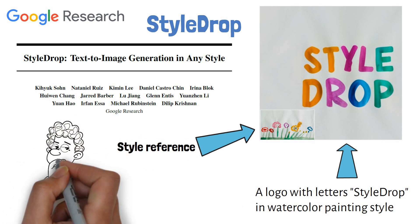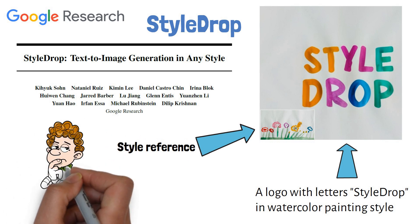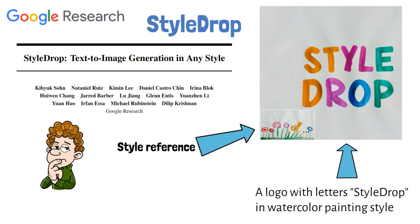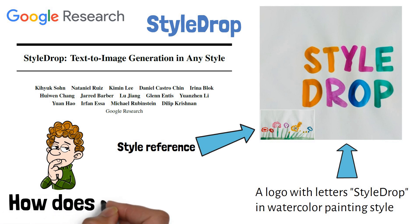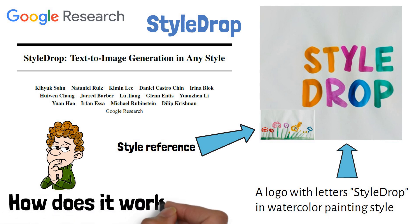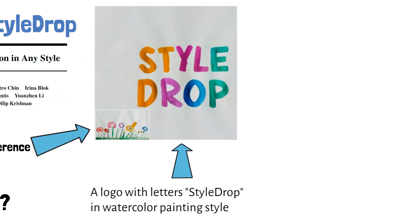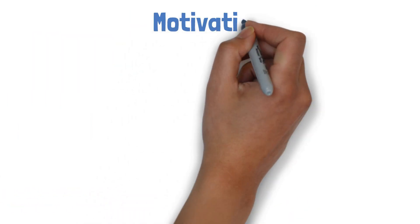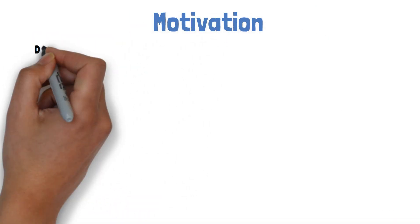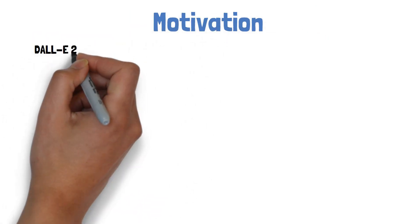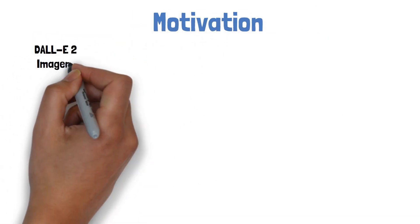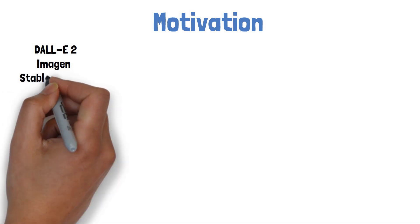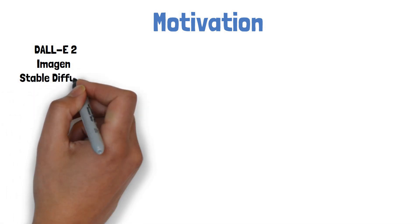The goal of this video is to explain the paper by discussing why it is so interesting and explain what the researchers did to make it work. Let's start with a short motivation for why this capability is important. Pre-trained text-to-image models such as DALL-E 2,